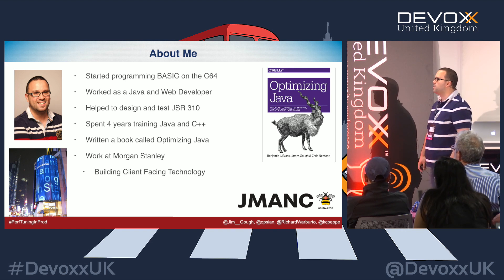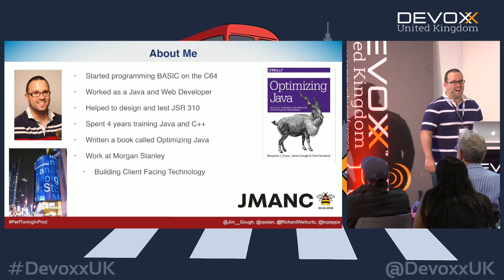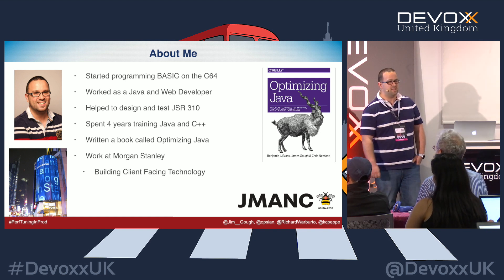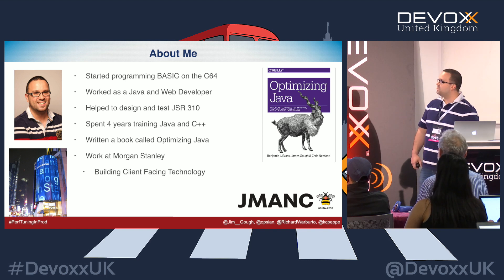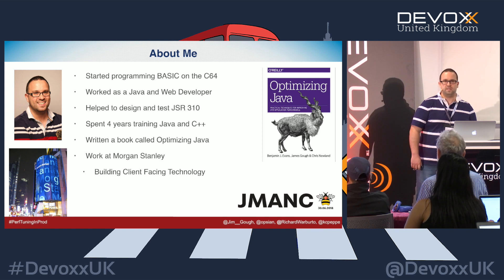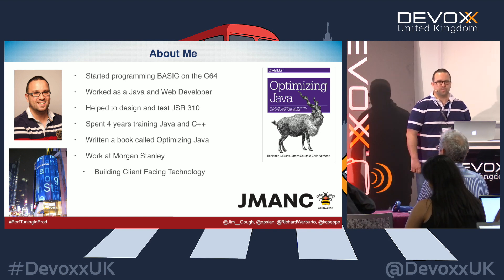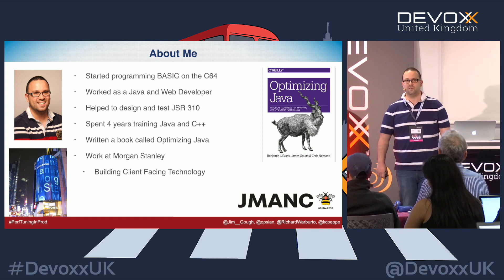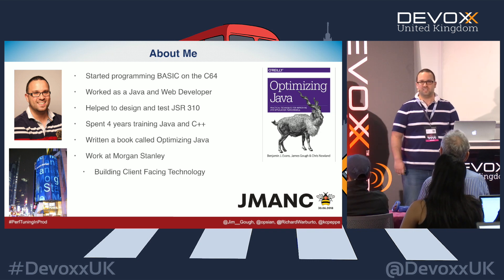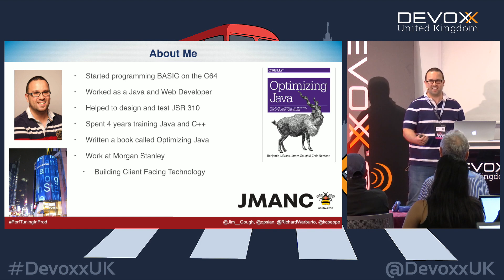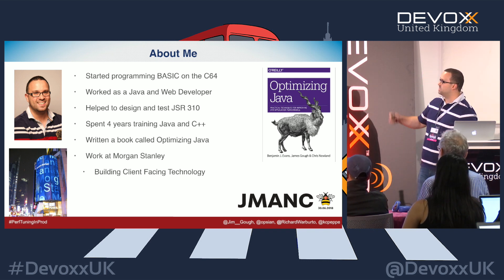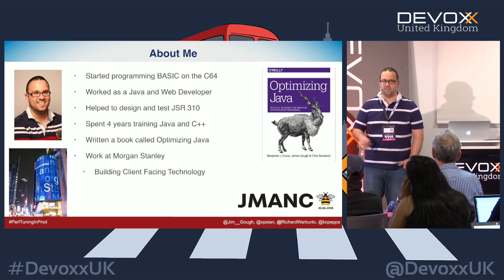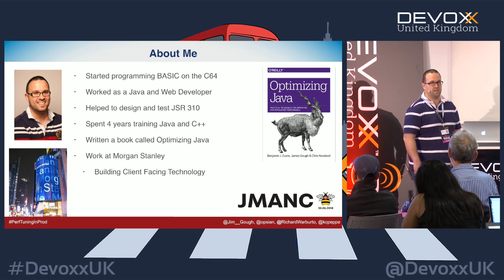About me — I started programming when I was six on a C64 doing BASIC, and I wouldn't say my code's got much better than that. I worked as a Java developer, and telling people you're a Java developer means they immediately think JavaScript. After that I got heavily involved with the London Java community, helped design and test JSR 310 with Richard, spent four years training and conference speaking, and have now gone back to writing code working on APIs and Java. I finished writing a book with Ben and Chris Newland on Optimizing Java, which is the subject of this talk — now released.